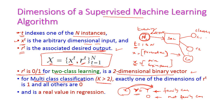In multi-class classification where k is greater than 2, we have more classes. Exactly one dimension of r_t is 1 — meaning the sample belongs to that particular class — and all others are 0. In regression, r is a real value from 0 to m. Instead of predicting a class, we try to predict the exact value of r.